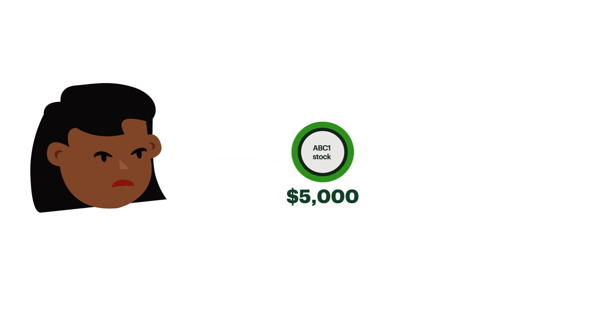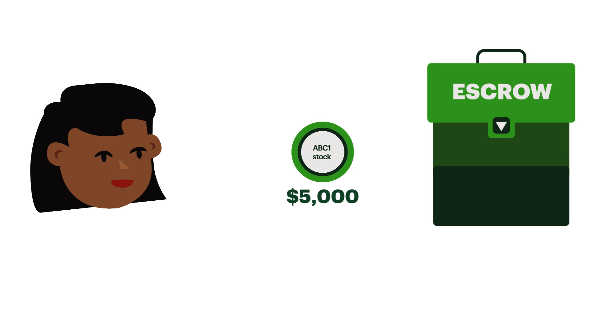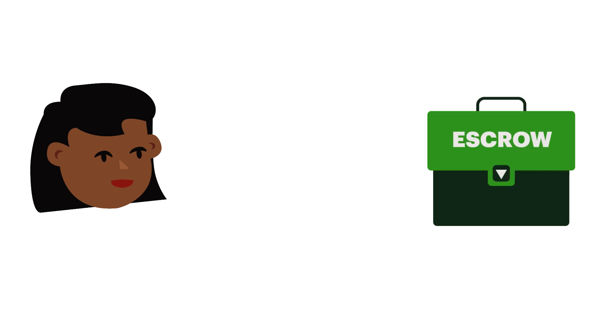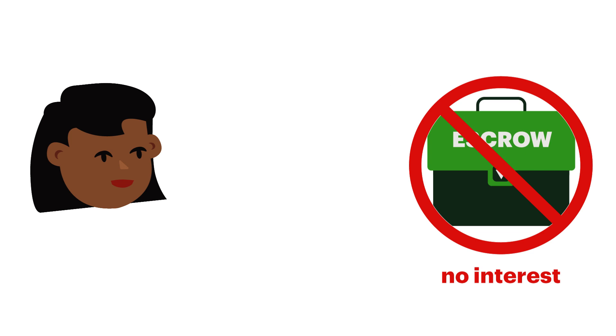If you short five thousand dollars of stock, the five thousand dollars doesn't immediately become yours. In fact, the five thousand dollars acts as collateral against the shares that you borrowed, and it's held in escrow until you close your short position.